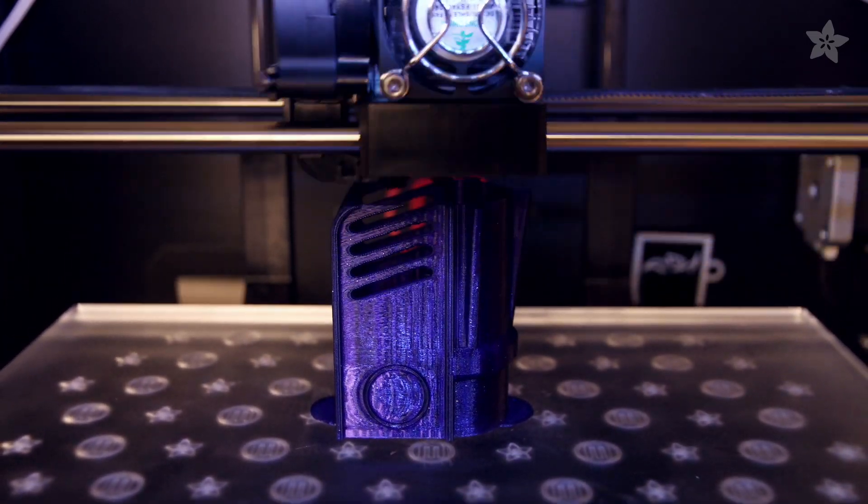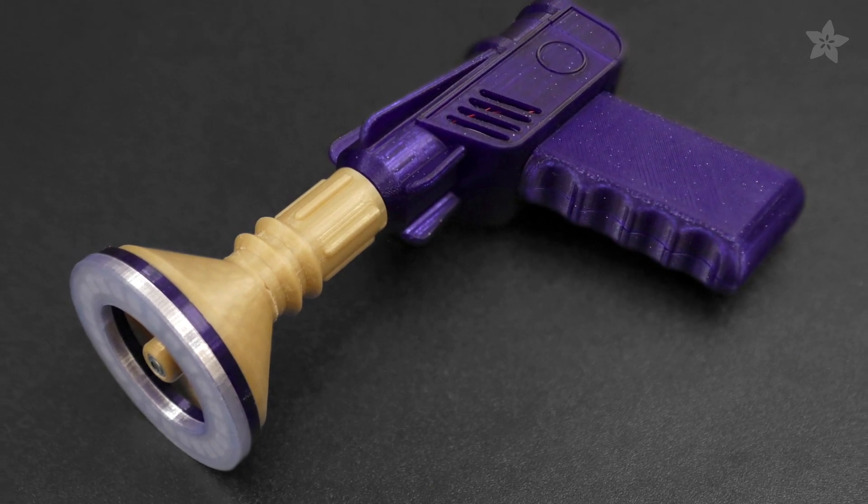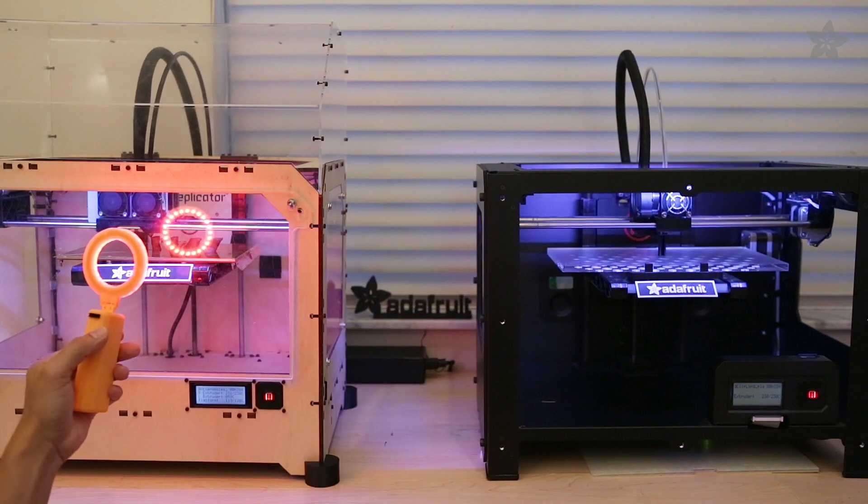This 3D printed project comes in two different styles. This NeoPixel blaster makes a practical ray gun, and this ergonomic handle resembles a magnifying glass.